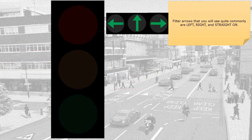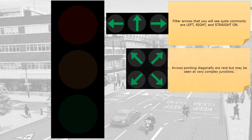Filter arrows that you will see quite commonly are left, right, and straight on. Arrows pointing diagonally are rare, but may be seen at very complex junctions.